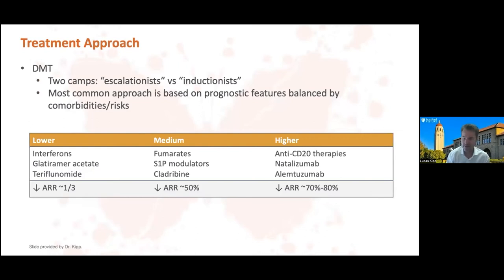The most common approach, and the one I personally use, is an individualized approach based on prognostic features, the risks of therapy, and the patient's other medical comorbidities. I must emphasize that patients and clinicians alike have a tendency to overestimate the risks of side effects and significantly underestimate the risks of under-treating MS, where the risk of disability is exceedingly high. For that reason, coupled with the evidence of the advantages of high-efficacy therapy early on, I tend to start patients on medium to high-efficacy therapies almost exclusively, and only very rarely start low-efficacy therapies.